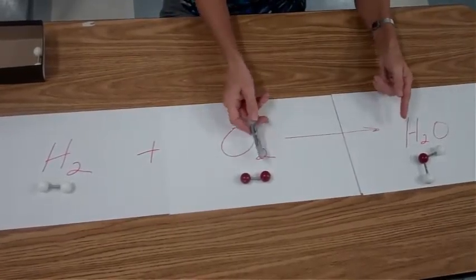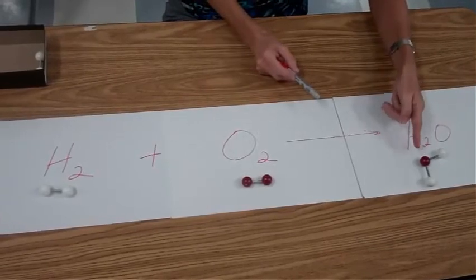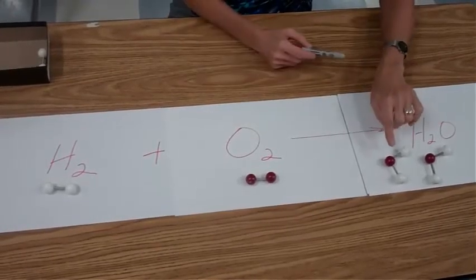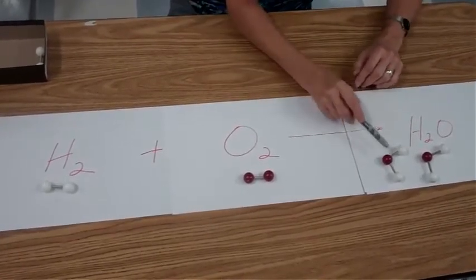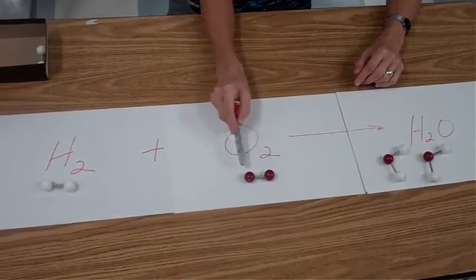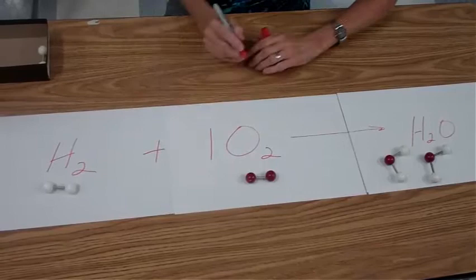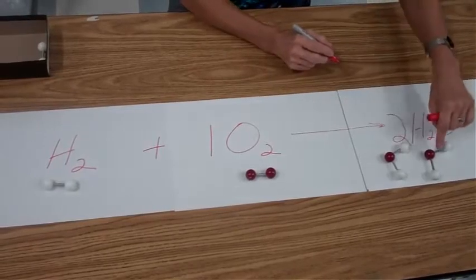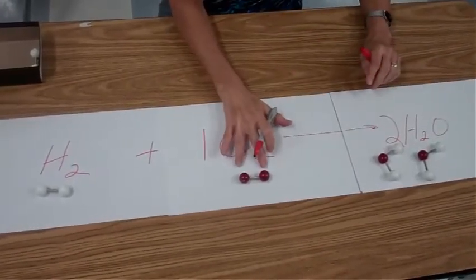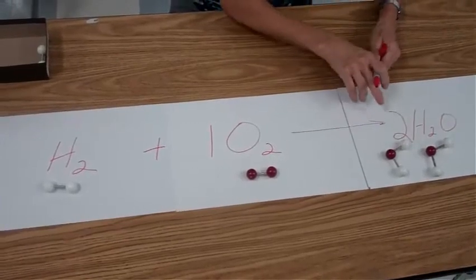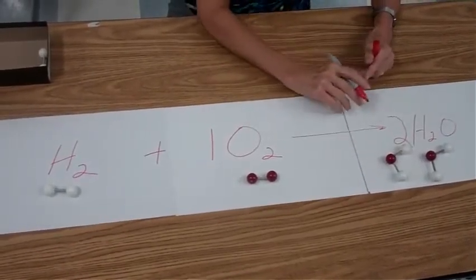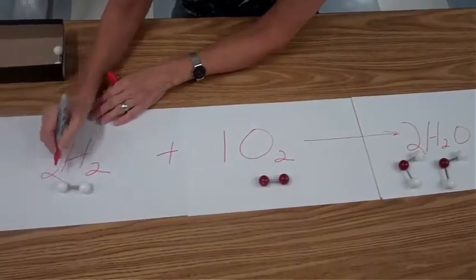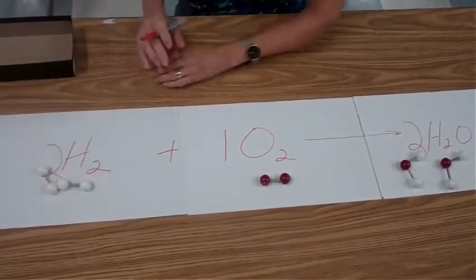Starting with oxygen, I have two oxygen atoms and one oxygen atom. So what I'm going to do is bring another water molecule over here to give me another oxygen. Now my oxygens are balanced — that's one molecule of oxygen and two molecules of water. Here are the two molecules of water. I have two oxygens and two oxygens, and I have two and four hydrogens. This is not balanced over here. So I must put a two here and add another molecule of hydrogen.